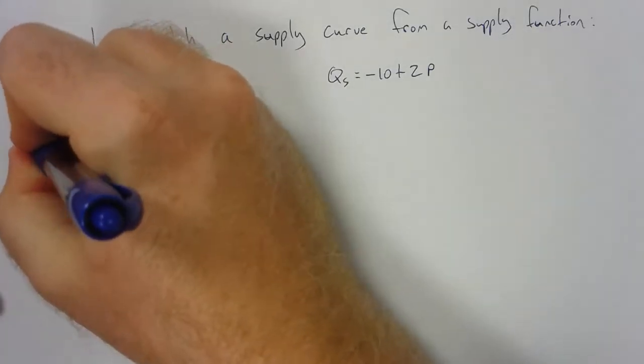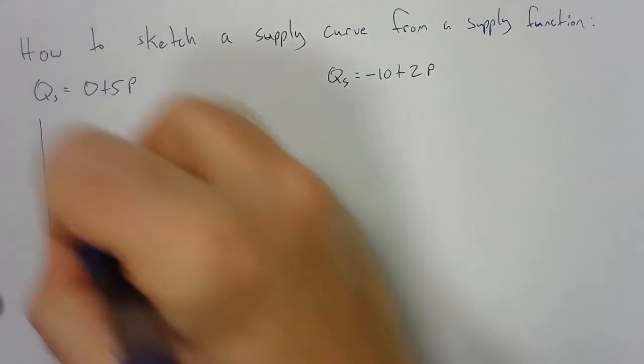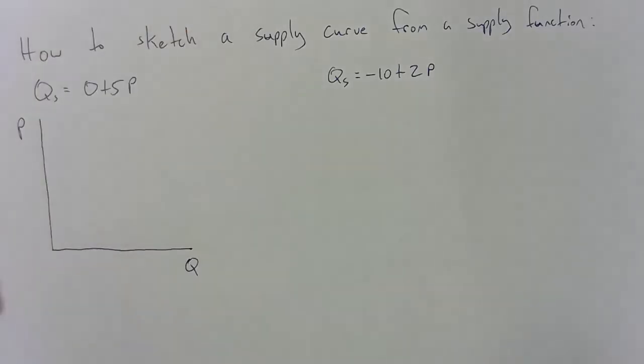Basically what you're going to want to do is sketch your graph. You'll have quantity and price. You want to figure out where the intercept is going to be.